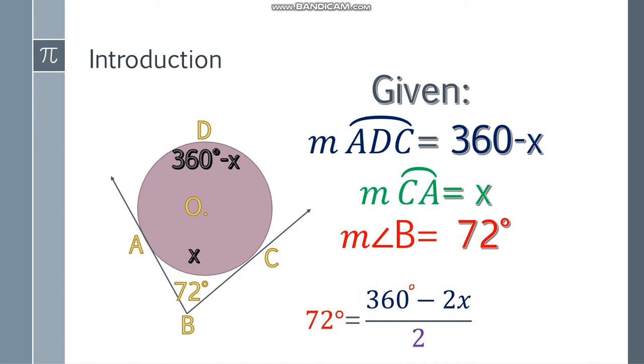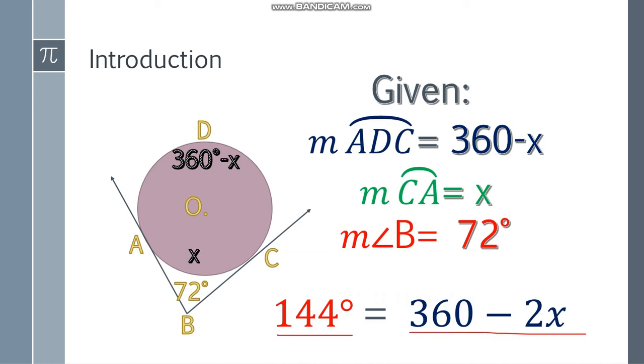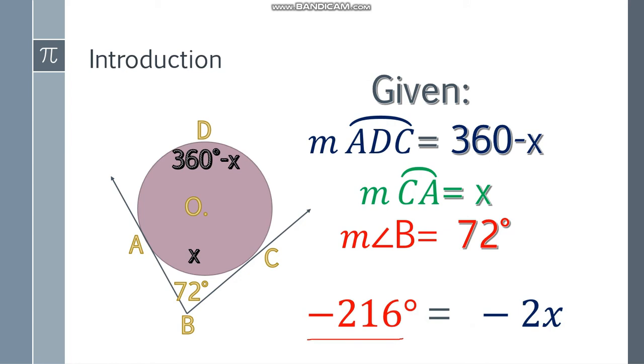Now, this is just algebra. Multiply both sides by 2, and you will get 144 degrees, and the fraction will disappear. So here we have 360 minus 2X. To get the value of X, let's isolate it. So subtract 360 from both sides, that will be negative 216 degrees minus 2X. Divide both sides by negative 2 to get the value of X, and that will be 108 degrees.